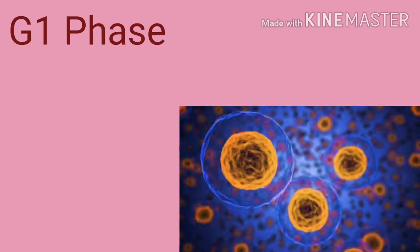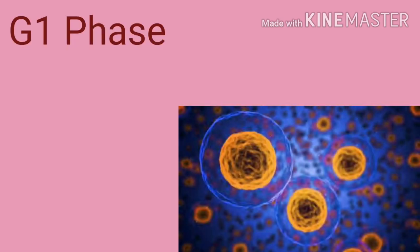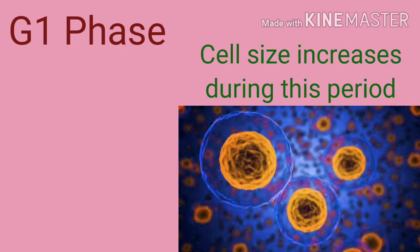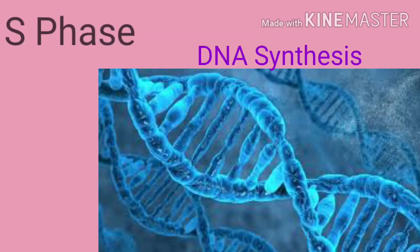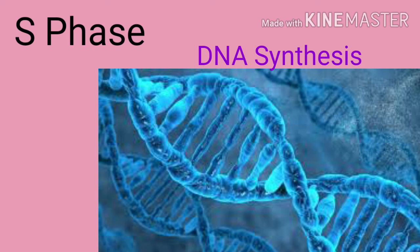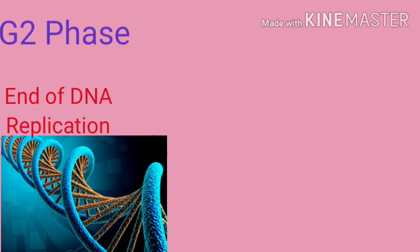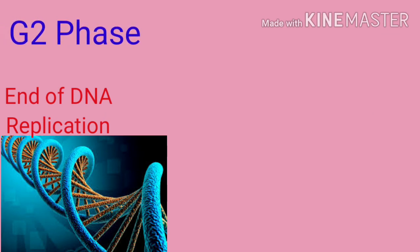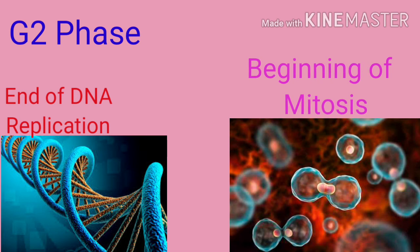The G1 phase is the linking period between the completion of mitosis and the beginning of DNA replication; the cell size increases during this period. The S phase is the period of DNA synthesis, leading to duplication of chromosomes. The G2 phase is the time between the end of DNA replication and the beginning of mitosis.